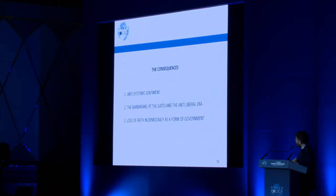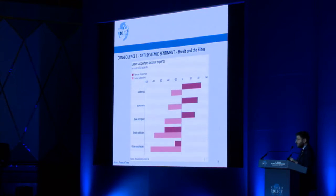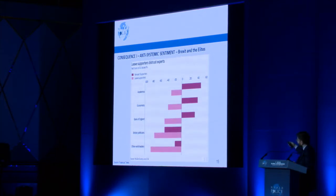The consequences — and I'll fly through these — are in my mind three, though there are many more. One is a growth in anti-systemic sentiment. Following the Brexit debate closely, these bars show the level of trust in academics, economists, the Bank of England among those who voted leave or remain. Brexiteers were highly suspicious of experts. There was an avalanche of expert reports saying Brexit was a bad idea, and you still got Brexit. The breach of trust between elites and those they represent has been growing, now producing completely unpredictable political outcomes.